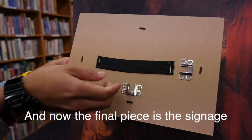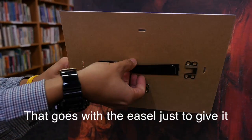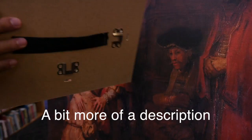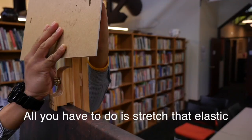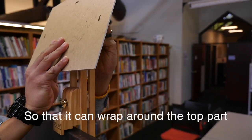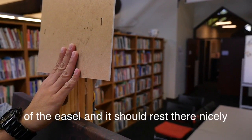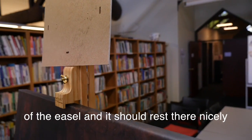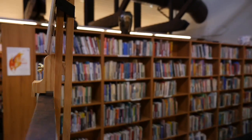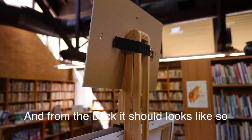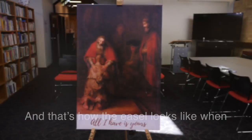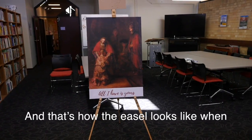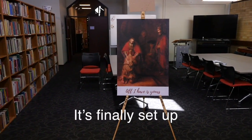Now the final piece is the signage that goes with the easel, just to give it a bit more of a description. It's a frame with an elastic on the back. All you need to do is stretch that elastic so it can wrap around the top part of the easel, and it should rest there nicely. And from the back it looks like so. And that's how the easel looks when it's finally set up.